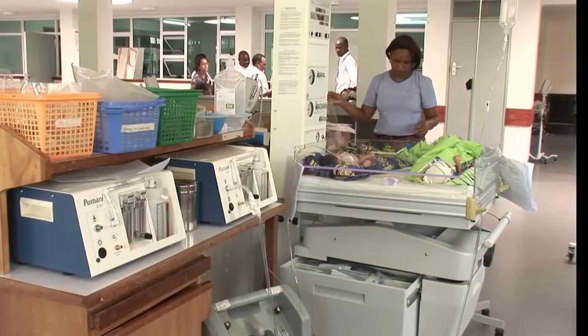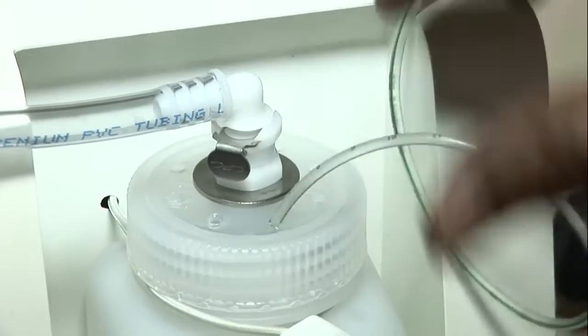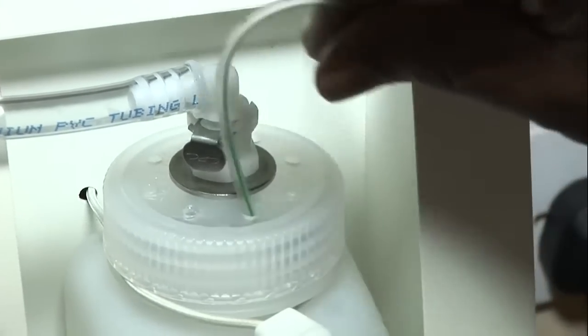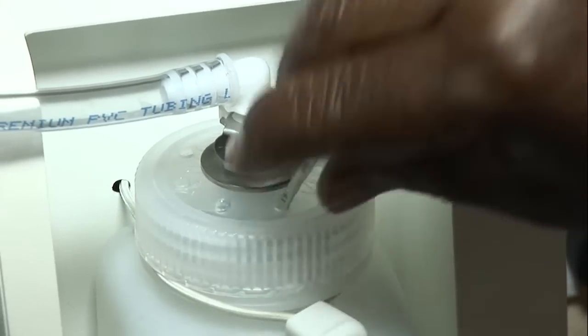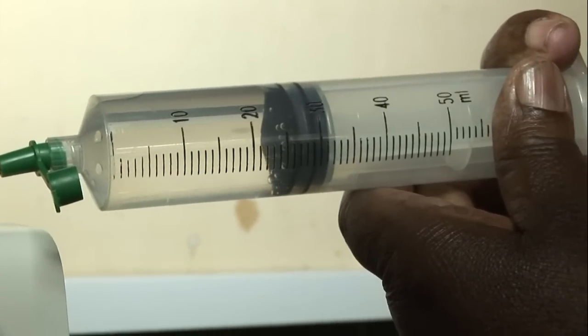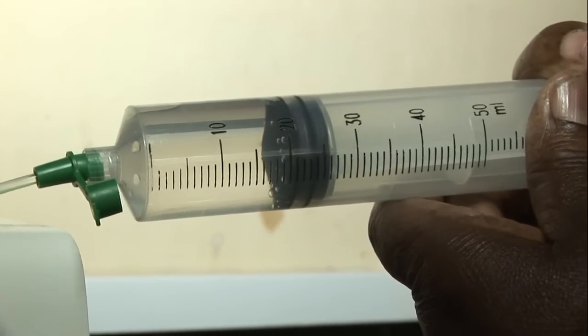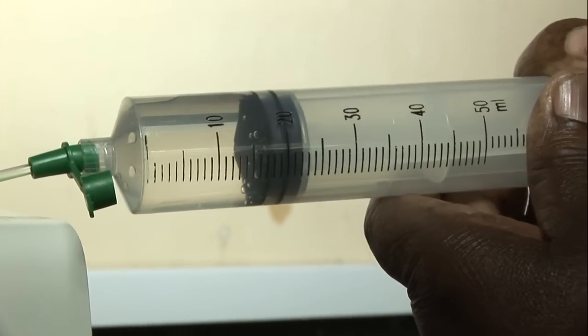Likewise, if the other signs of respiratory distress are worse or still severe, then you can increase the pressure of air. This is done by adding a centimeter of water to the bottle. This can be repeated every time you monitor until a maximum of eight centimeters is reached.